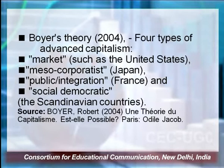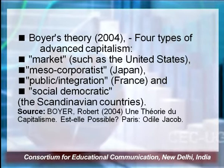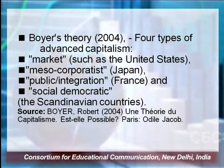Boyer's theory presents four types of advanced capitalism. The market type — an example being the United States; the meso-corporatist type — an example being Japan; public integration — an example being France; and the social democratic perspective from the Scandinavian countries. To understand this typology, one must refer to Boyer's important work from 2004.